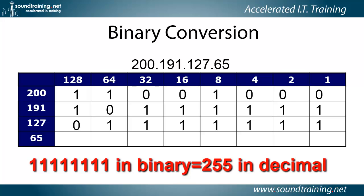Just remember that any time you see an 8-bit binary number in which all of the bits are turned on, it has a value of 255. And conversely, any time you see a value of 255, that represents 8 bits all turned on in binary.